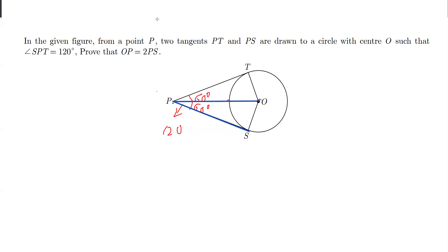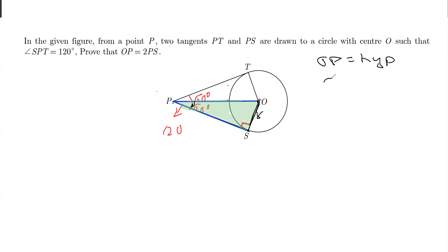We know that the radius is perpendicular to the tangent at the point of contact, so this angle is 90 degrees. Considering the triangle, OP acts as the hypotenuse — the side opposite the 90-degree angle — and OS, although it is a radius, acts as the perpendicular for triangle purposes.